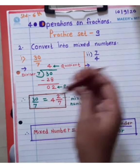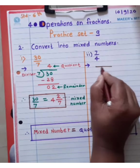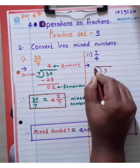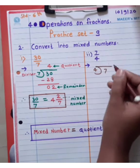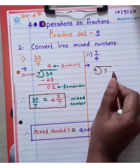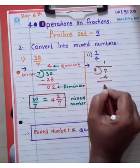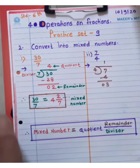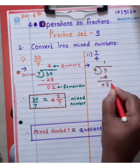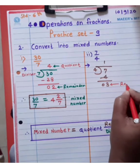Then second example. 7 divided by 4. It means 7 divided by 4. 2 fours are 8, which is greater than 7, so 1 four is 4. Only remainder 3.